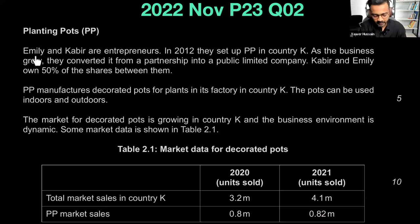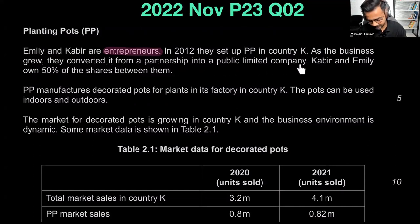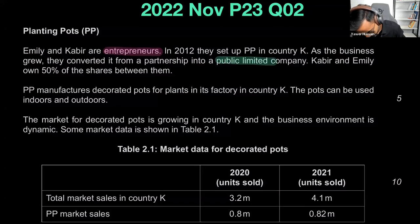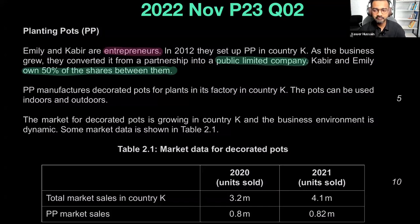So this is called Planting Pots. Emily and Kabir are entrepreneurs — there's a Part A question about entrepreneurs. In 2012, they set up PP in Country K. As the business grew, they converted it from a partnership into a public limited company. Kabir and Emily own 50% of the shares between them. We know they are now a public limited company. They own 50%, but that doesn't mean they have the controlling stake — controlling stake means 51%. This will become important in Part C where we discuss sources of finance.